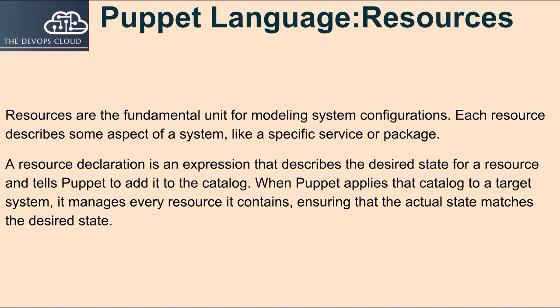Resources are the fundamental unit for modeling system configurations. Each resource describes some aspect of a system, like a specific service or package. A resource declaration is an expression that describes the desired state for a resource and tells Puppet to add it to the catalog. When Puppet applies that catalog to a target system, it manages every resource it contains, ensuring that the actual state matches the desired state.